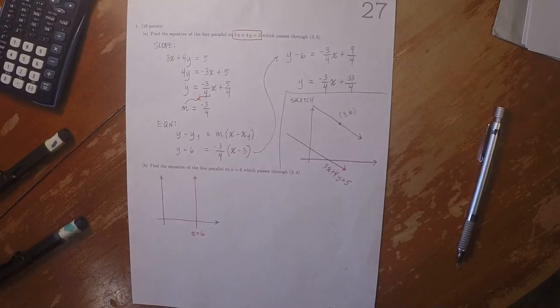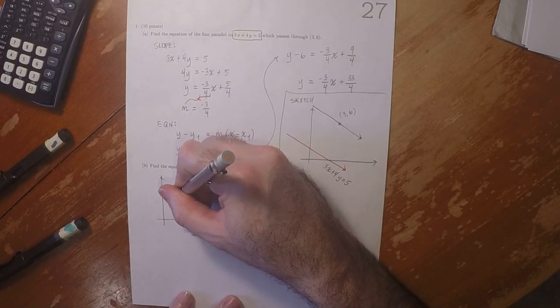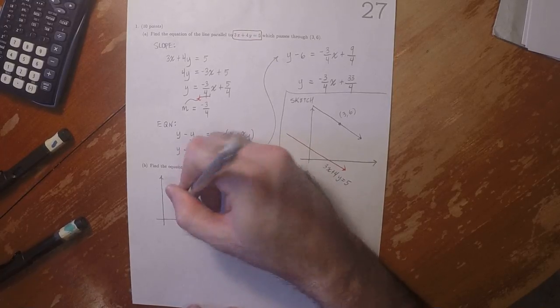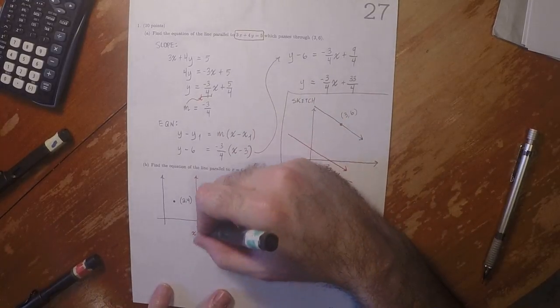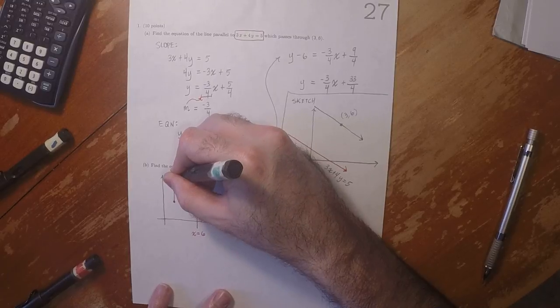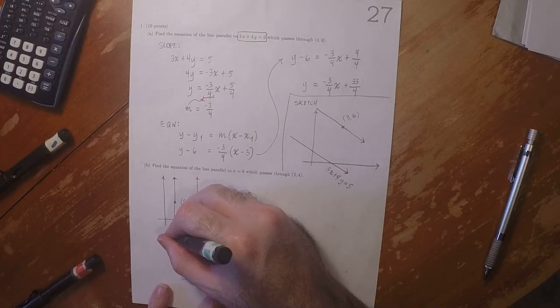So x is 6. And then the point 2, 4 is here. Well, that's a vertical line. So a parallel line must also be vertical. So that's the line we're looking for. And that is the line x equal to 2.